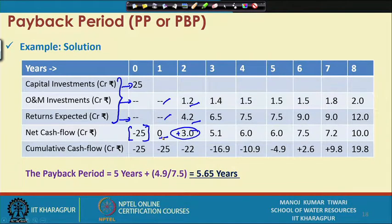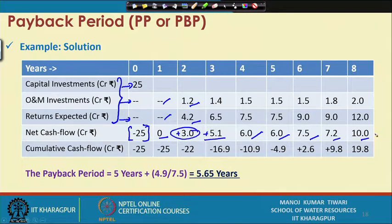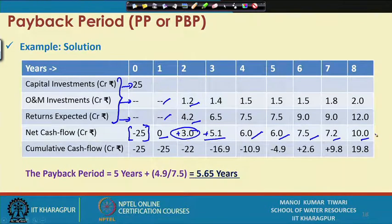In year 3, O&M expenses are 1.4 and return expected is 6.5, so the net cash flow is plus 5.1. Year 4 gives 7.5 minus 1.5 equals 6, year 5 is 6, year 6 is 7, year 7 is 7.2, and year 8 is 10 crore. This net cash flow is obtained by deducting the O&M investment from the return expected in each particular year.